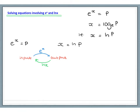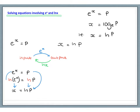Starting with e to the x equals p, we know x equals ln p. The step we don't always write down is that we're taking ln of both sides: ln of e to the x and ln of p. Now, ln of e to the x simplifies to give us x, and ln of p is ln of p. Usually we go straight from the original equation to x equals ln p, but this is what is actually taking place.